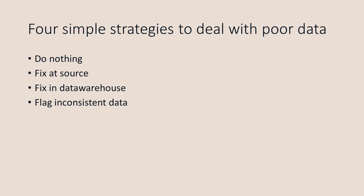What can we do about these data quality issues? We have four simple strategies. First, we can do nothing and build the data warehouse and reports with the data as-is. Second, we can fix it at the source by going back into the database or webshop and correcting the data. Third, we can fix issues in the data warehouse by overriding them — for example, changing 200 euros to 20 euros. Fourth, we can flag the inconsistent data in the data warehouse.